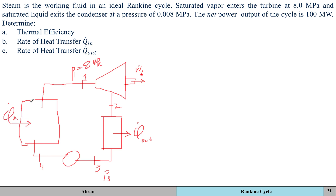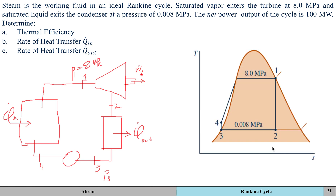Now I want you to try drawing the TS diagram yourself — pause the video and try it, then come back and compare. The TS diagram looks like this: state one is a saturated vapor entering the turbine, so it sits on the saturated vapor line. State two is a liquid-vapor mixture. State three is a saturated liquid. Process three to four is across the pump, and four to one completes the cycle.